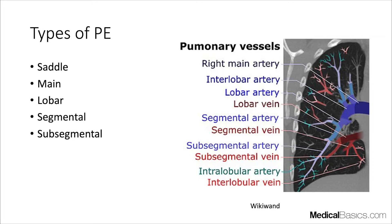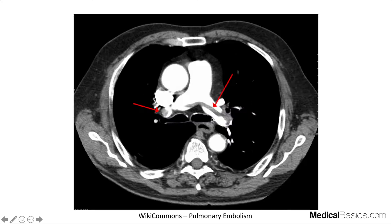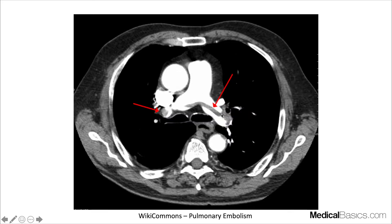Sometimes only segmental PEs are treated — it depends on the patient and their underlying condition. Here's an example of a saddle PE: it drapes over the bifurcation. This is the main pulmonary artery and here are the right and left branches. These are also the lobar arteries, and there's probably some degree of segmental and subsegmental involvement that we don't see.